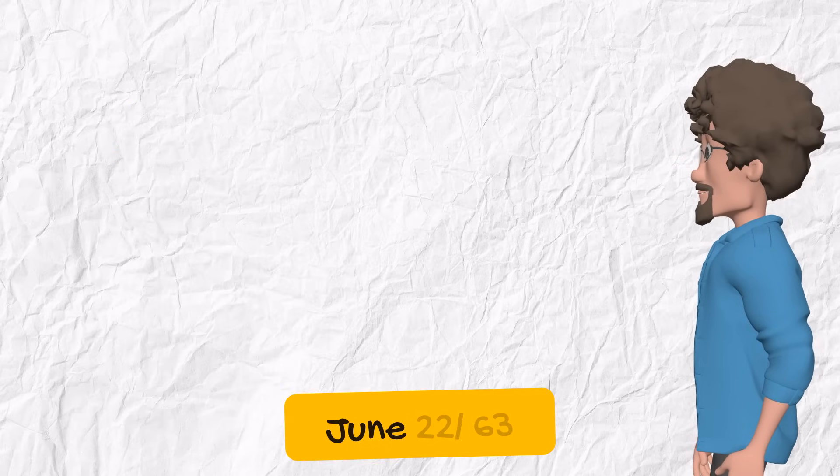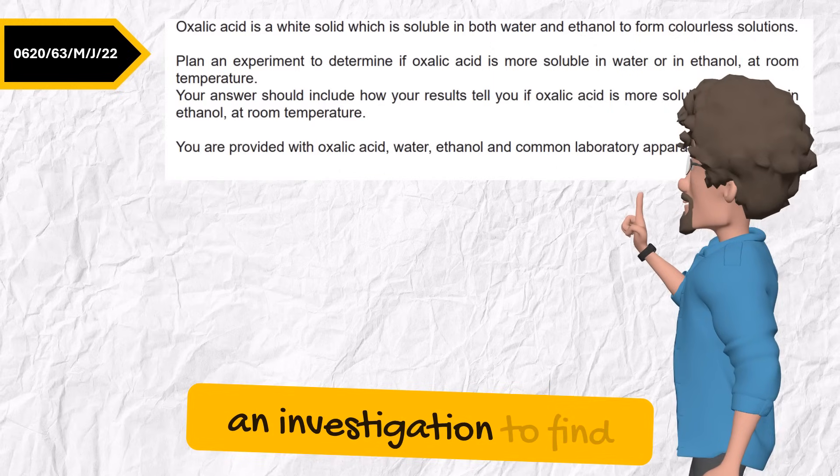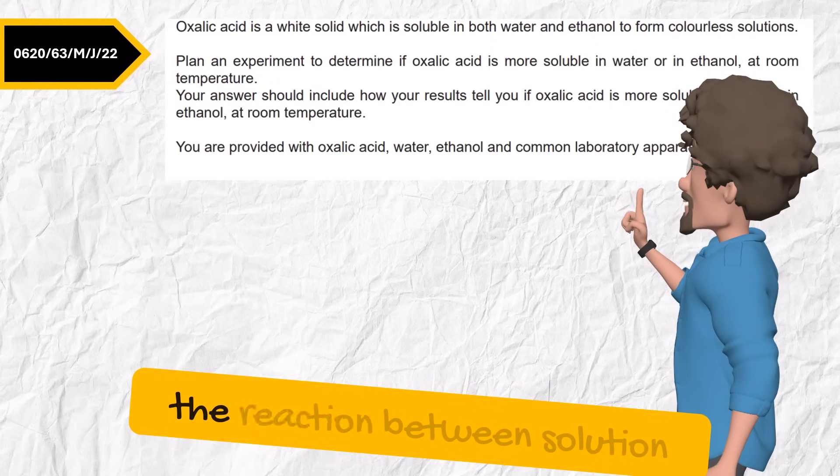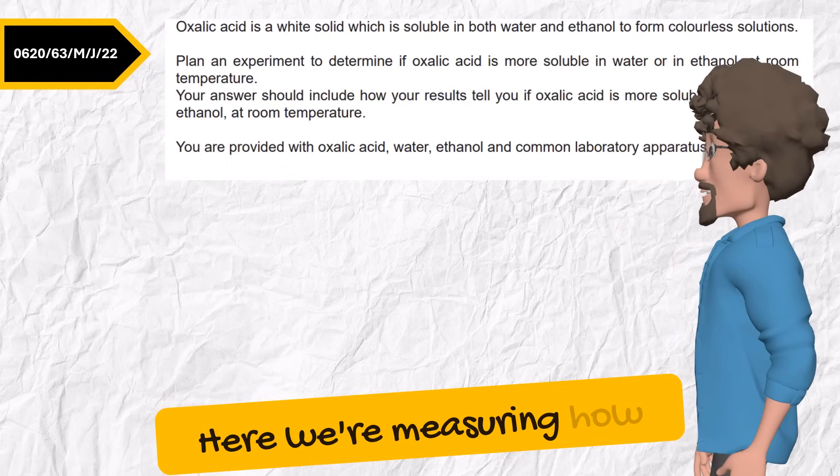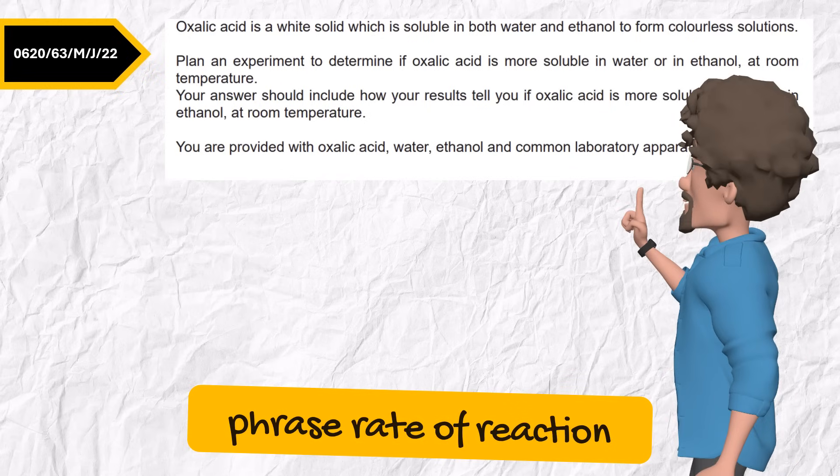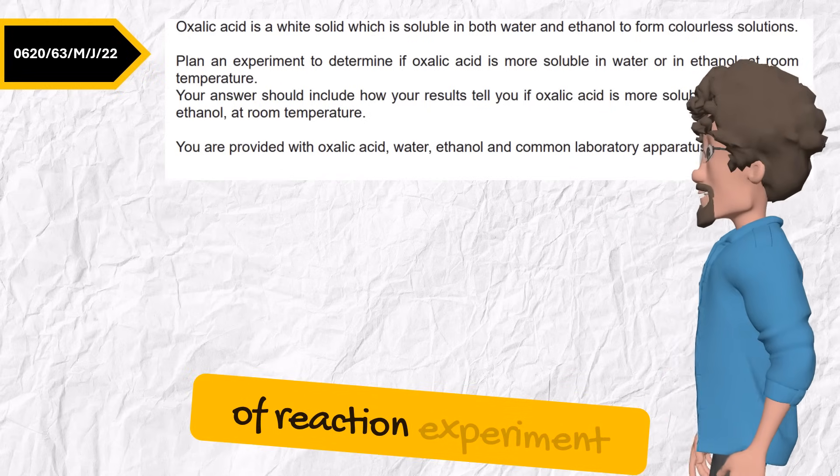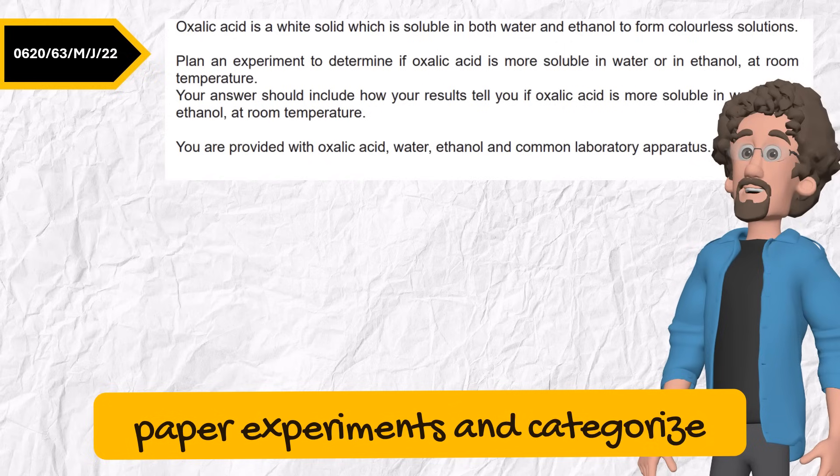Last example. June 2022, variant 3. The examiner asks, Plan an investigation to find the effect of temperature on the rate of the reaction between solution A and solution B. Here we're measuring how fast the reaction happens. They even say the phrase rate of reaction clearly. This is a rate of reaction experiment.